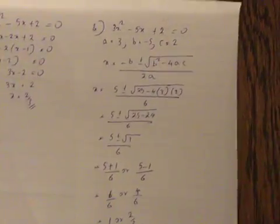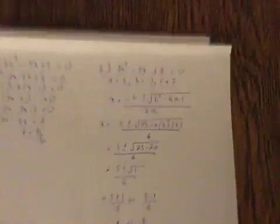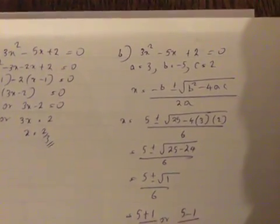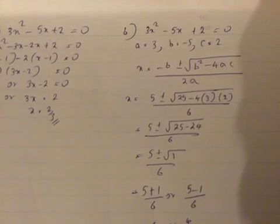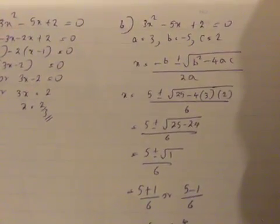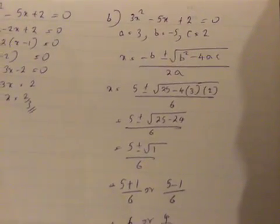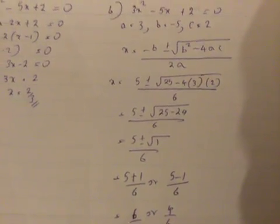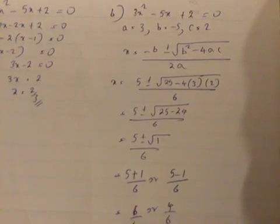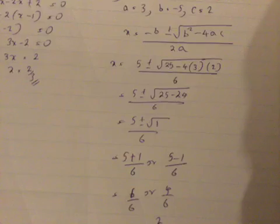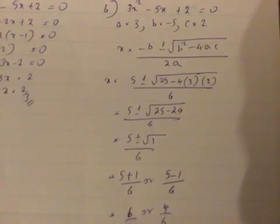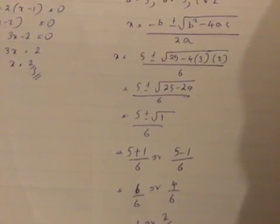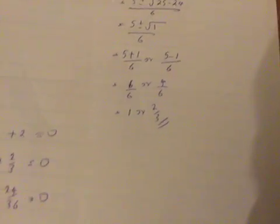Using the quadratic formula for 3x² - 5x + 2 = 0: a = 3, b = -5, c = 2. x = (-b ± √(b² - 4ac)) / 2a. Always write this formula down — you might get a mark even if the rest is wrong. So x = (5 ± √(25 - 24)) / 6 = (5 ± √1) / 6, which gives the same answers.